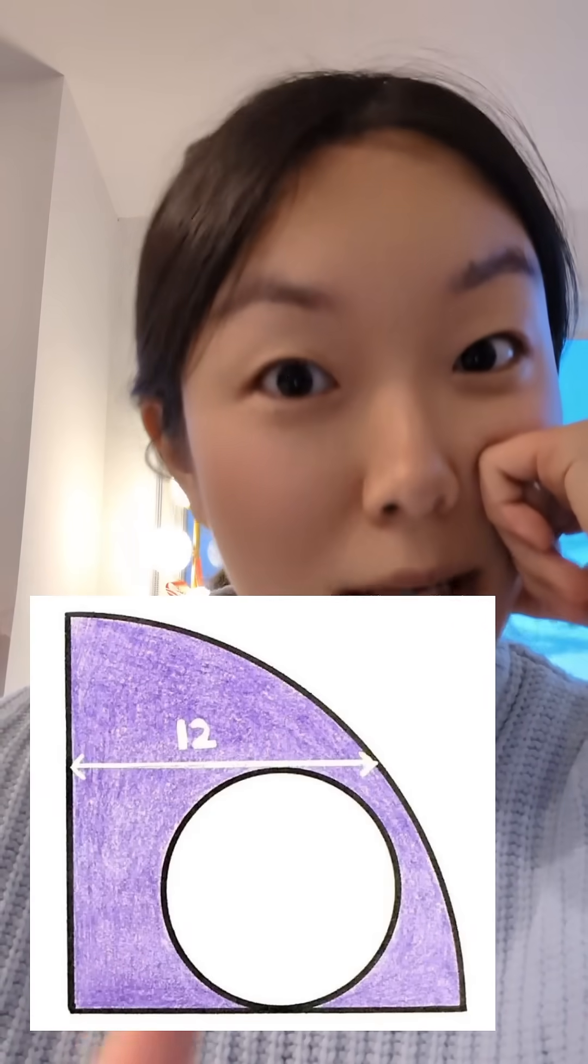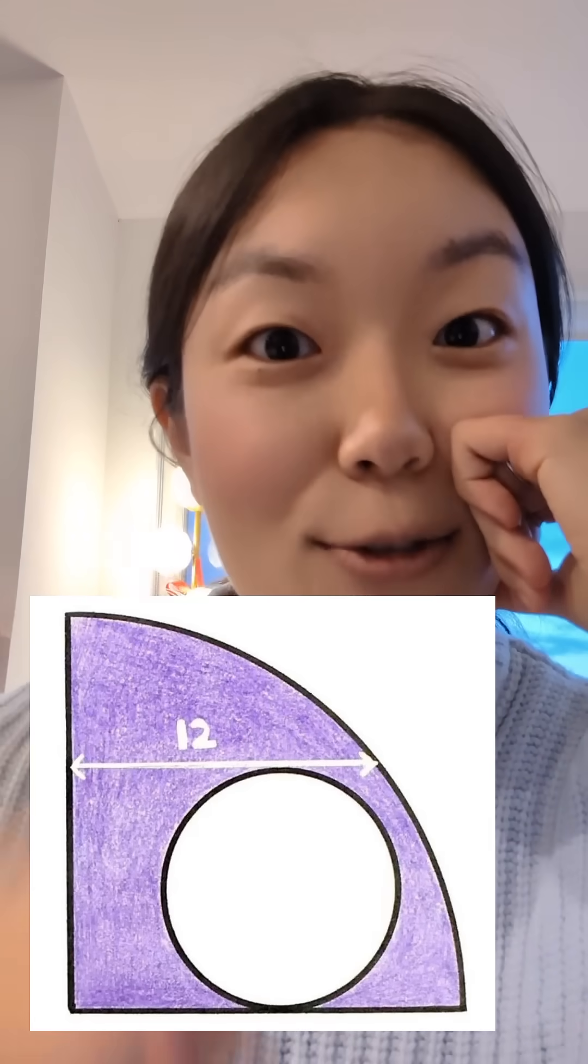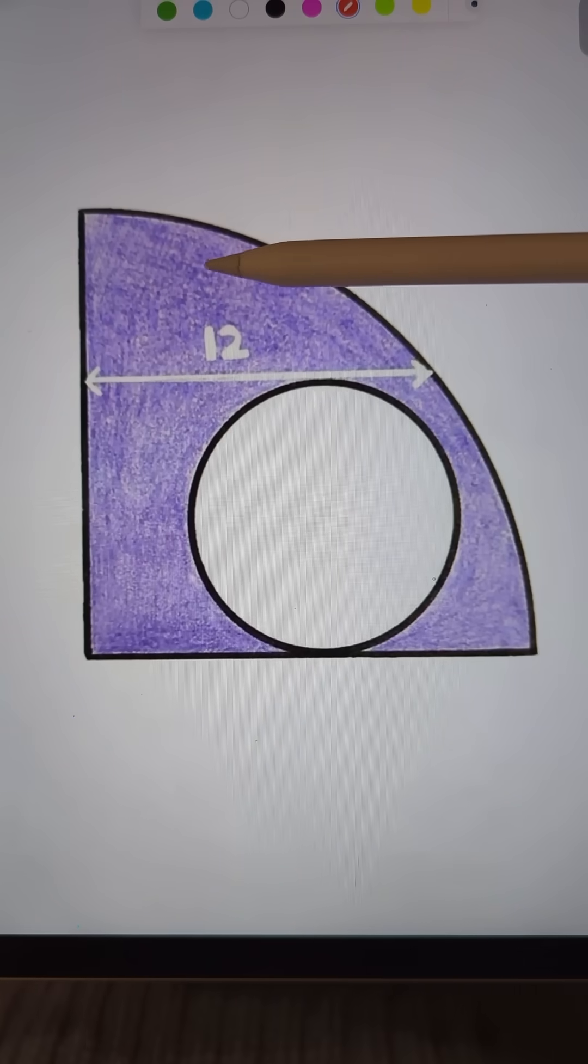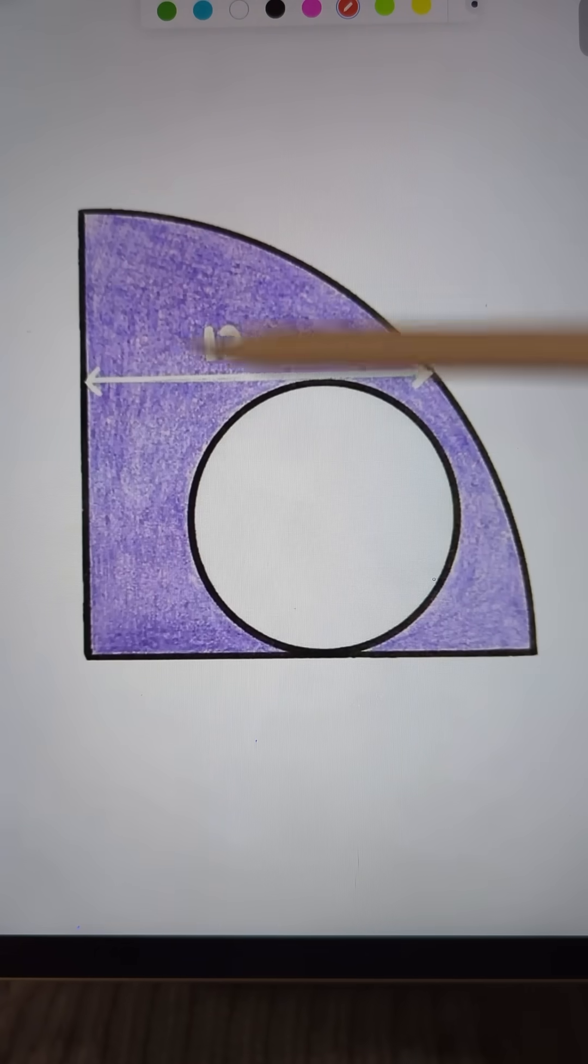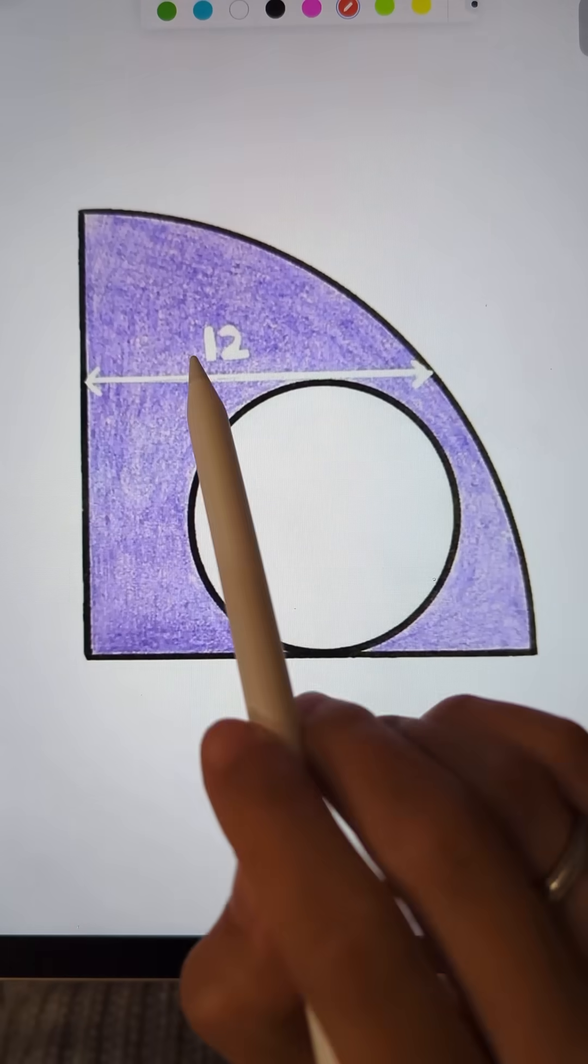A math PhD may even find this middle school geometry problem hard at first glance. See if you can do it: find the purple area. This is a quarter of the larger disc, and inside of it is the smaller disc, and the only measure that we know is this: it's 12.